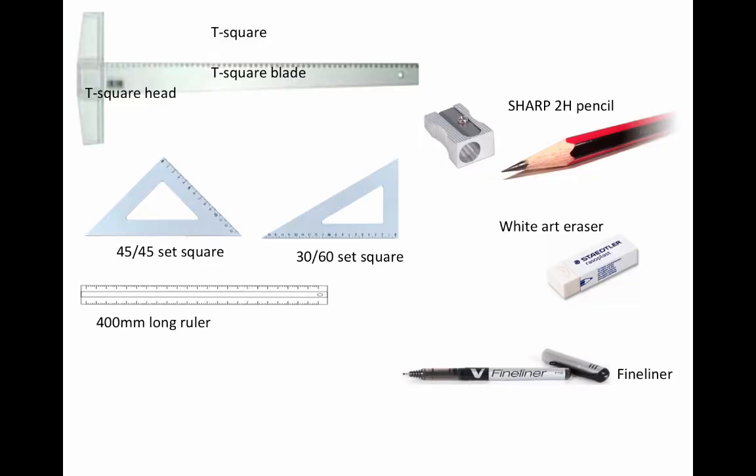In technical drawing, we need some basic equipment: a T-square, a 45-degree set square, a 30-degree set square, long ruler, pencil, eraser, sharpener, and a fineliner.